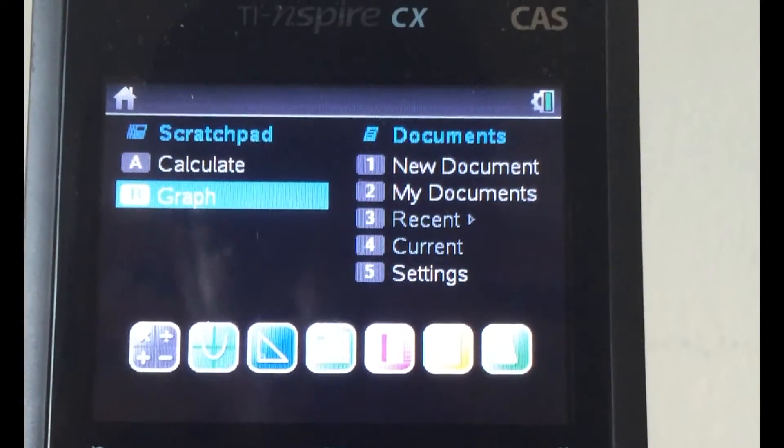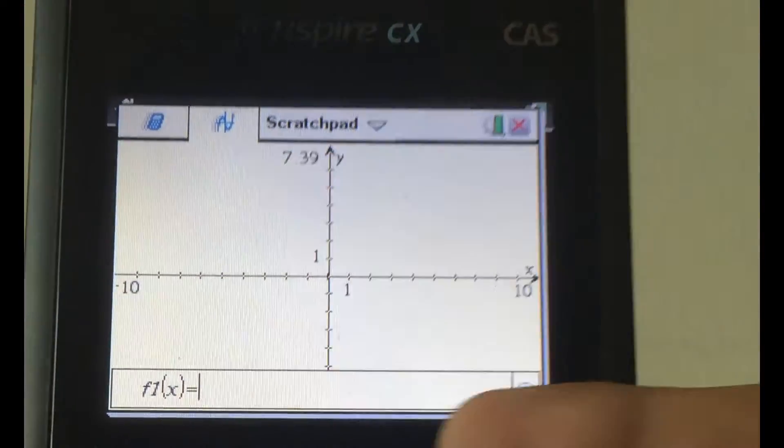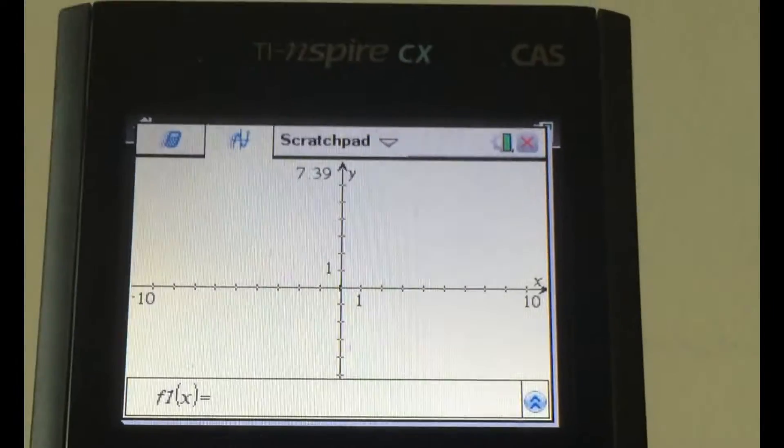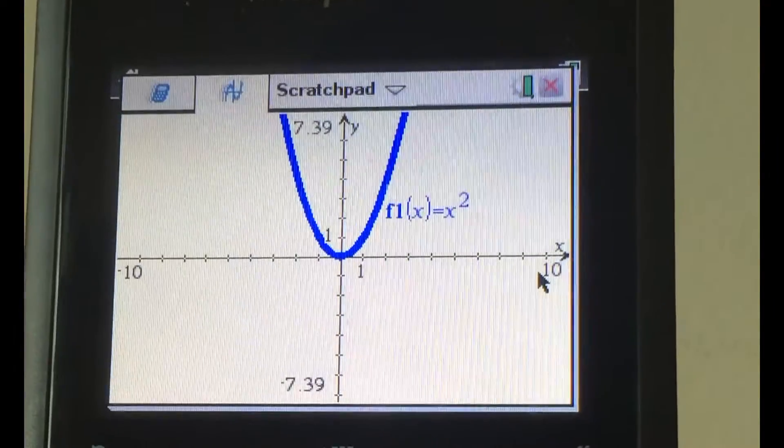Next, there's graph. So in graph, you can basically just plot any graph you need to plot. So over here, it says f of x is equal to something and then you can just set whatever you want it to be. And then it just plots the graph for you.